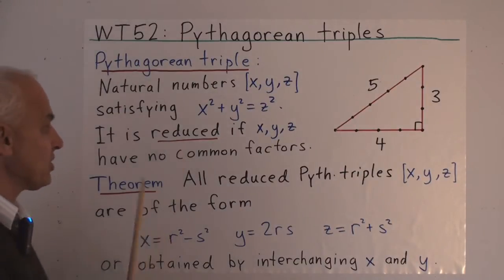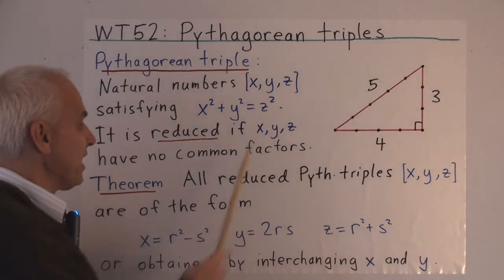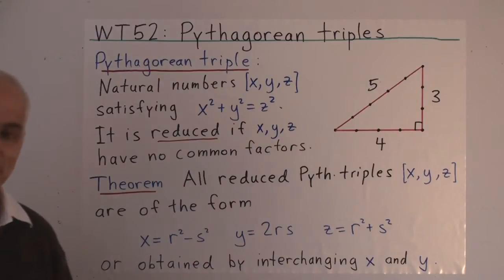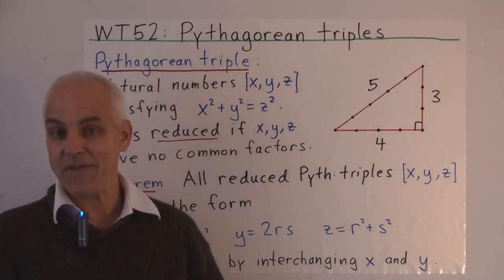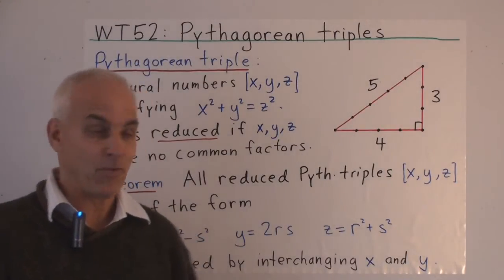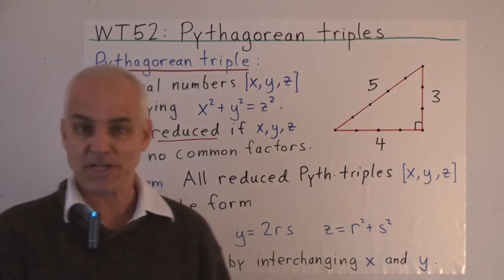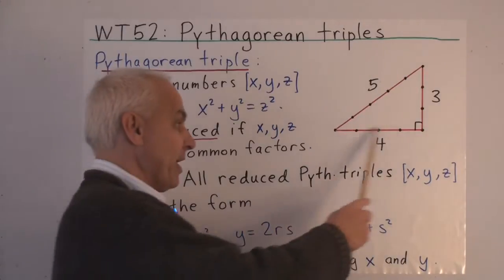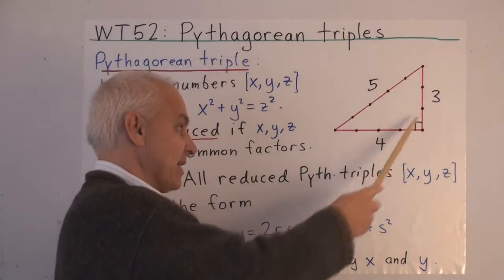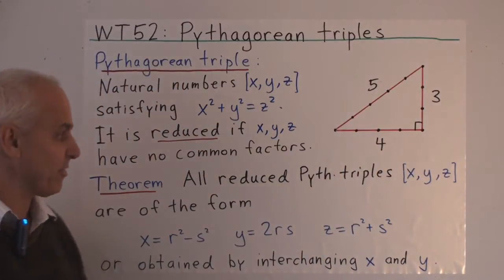We'll say that this triple is reduced if the three numbers x, y, and z have no common factors. Because one way of getting Pythagorean triples from existing ones is to multiply all the sides by a particular factor. For example, if we multiply each of the sides here by 2, we would get 6, 8, and 10, and that would also obviously be a Pythagorean triple.